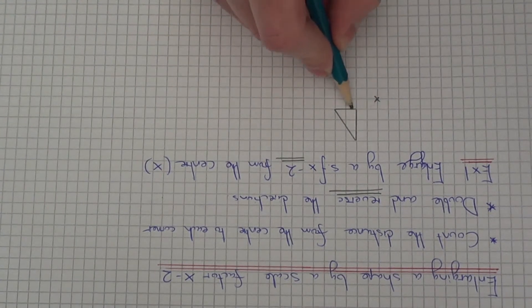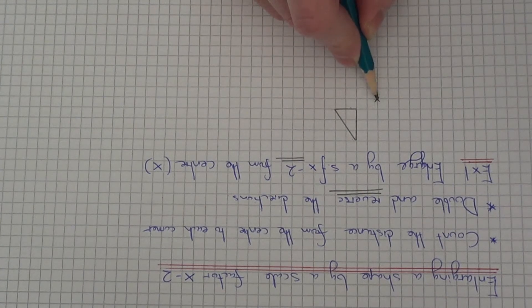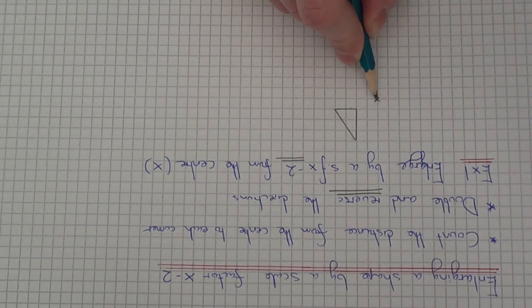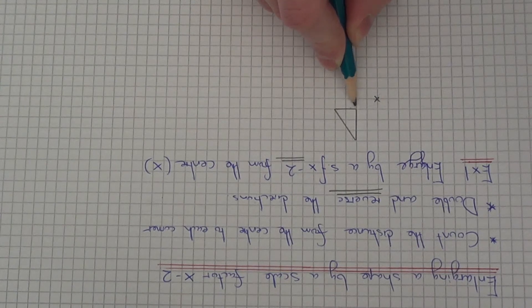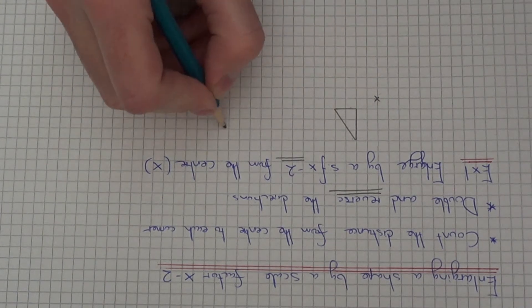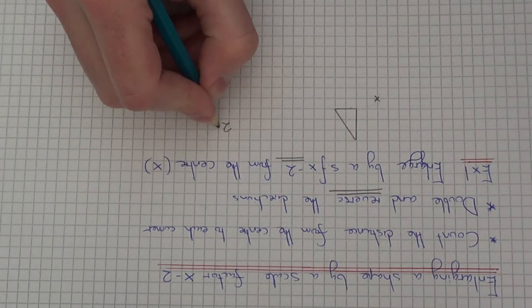So if you count the distance from the centre to each of the corners, let's start with the bottom left corner. So it's 2 squares right and 1 square up. So if you just make a note of that.